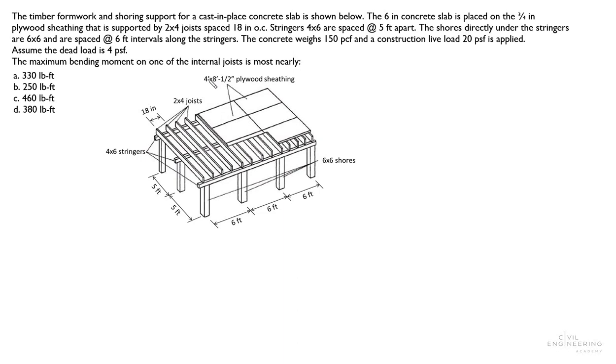So the question is, what is the maximum bending moment on one of the internal joists? I think this is a very good picture that's showing a regular traditional wood structure and also demonstrates a very clear load path for gravity load.